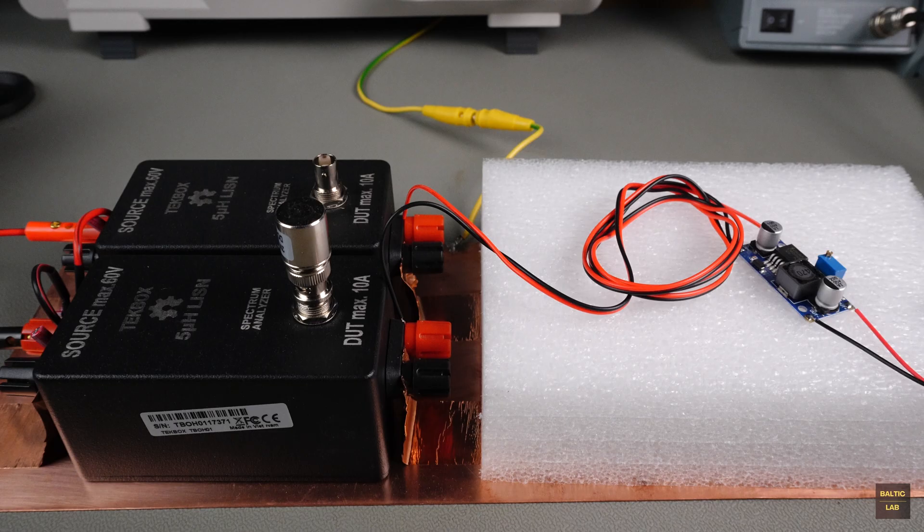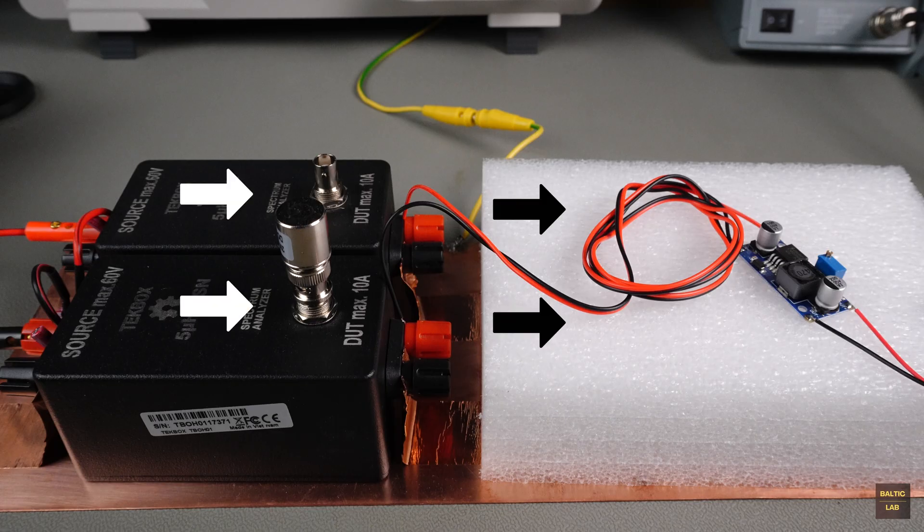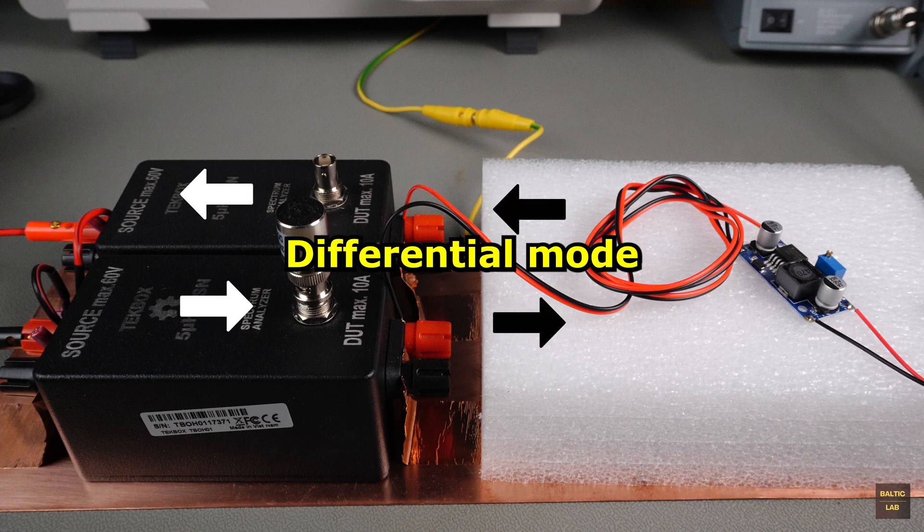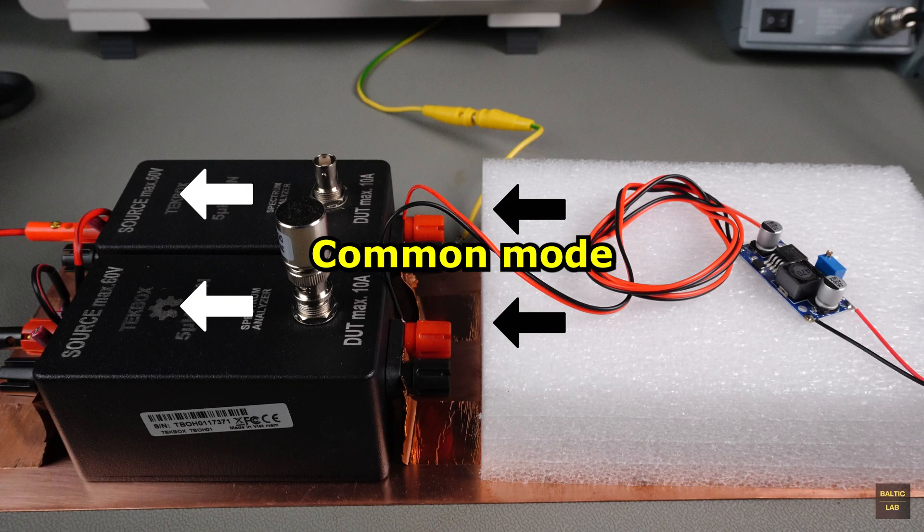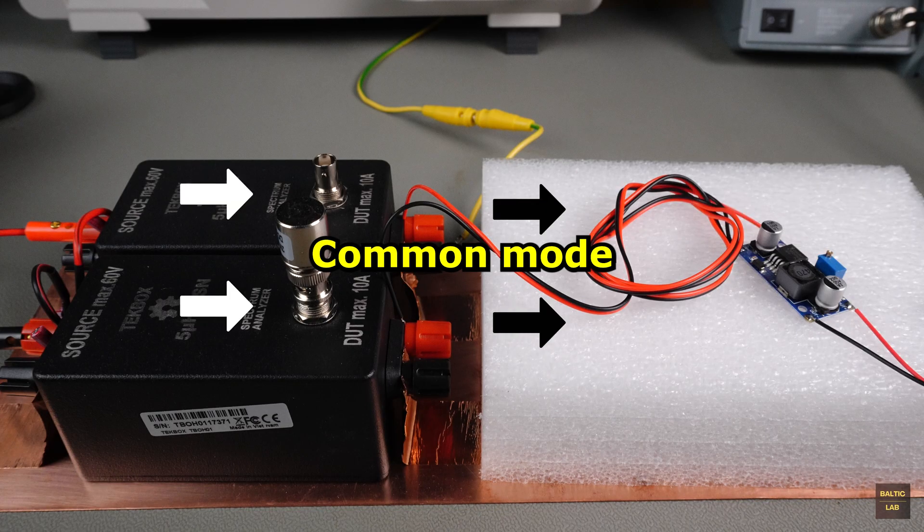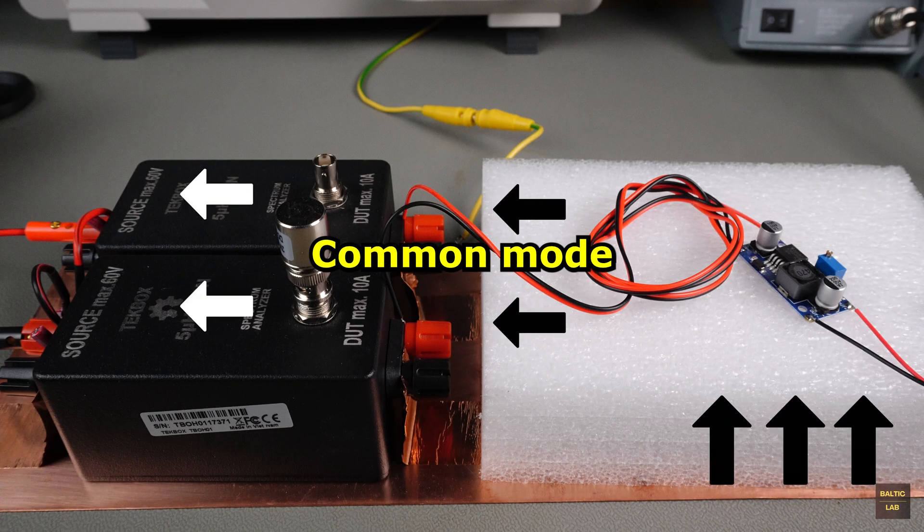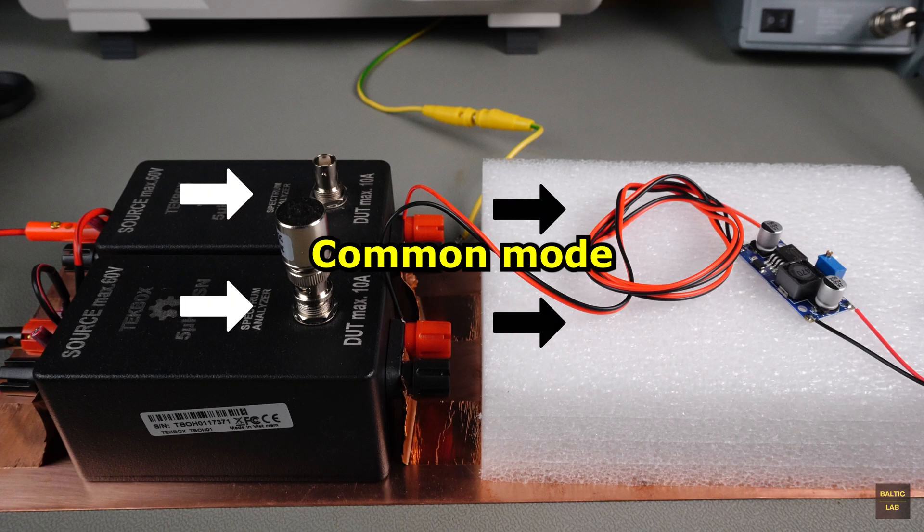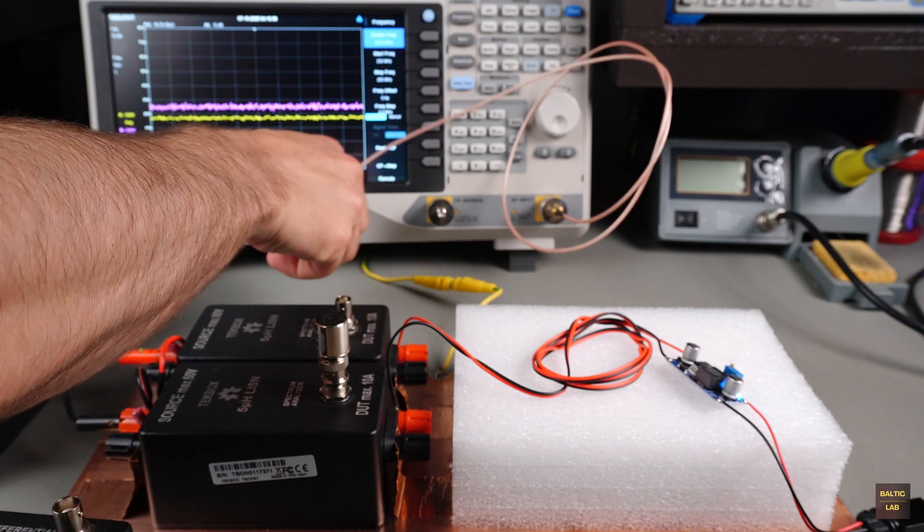To get to the root of the interference, we need to understand the different propagation modes on the supply lines. Specifically, we're dealing with two types of noise here: differential mode and common mode. Differential mode noise occurs when interference signals travel in opposite directions along the positive and negative lines. Common mode noise, on the other hand, flows in the same direction through both lines and typically returns via radiated emissions or coupling effects. In this case, capacitive coupling to the ground plane.